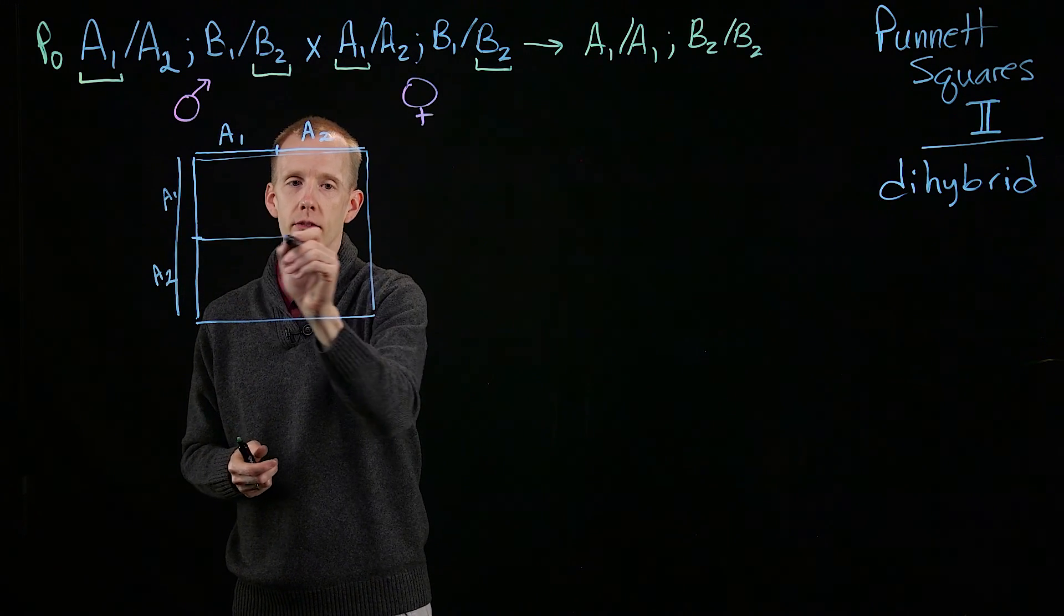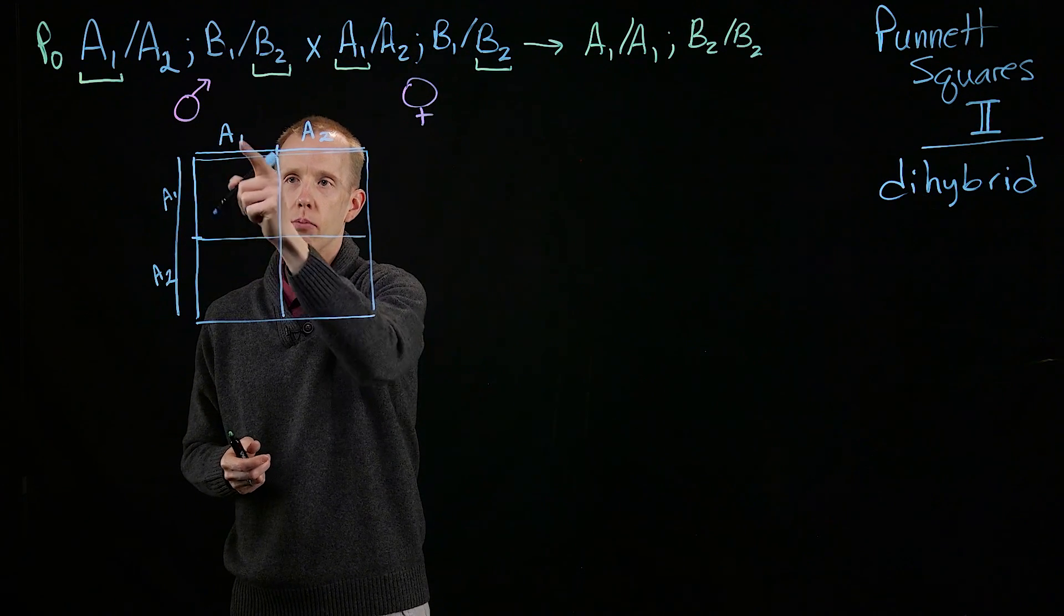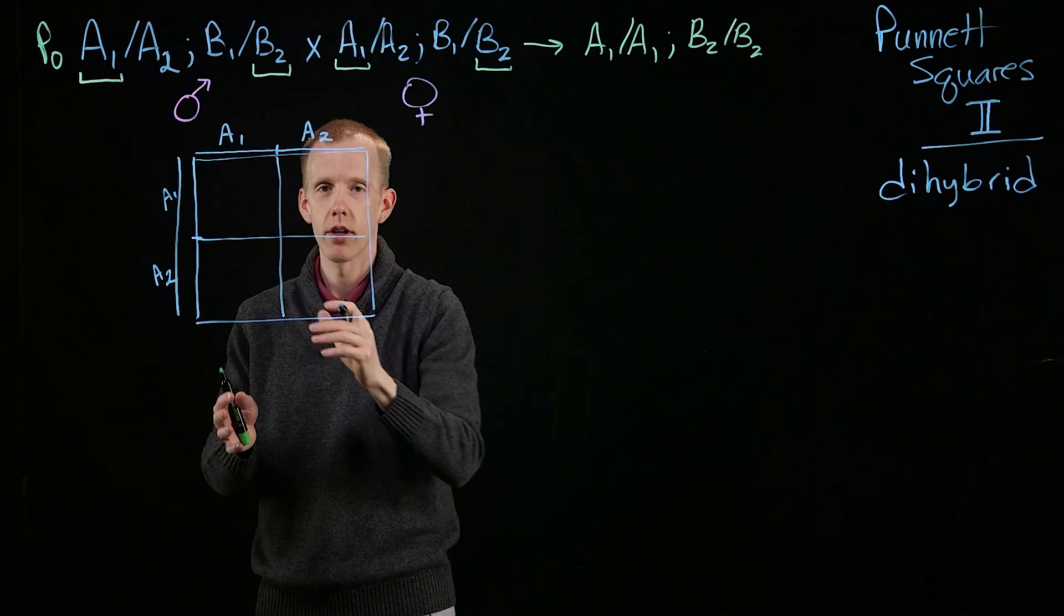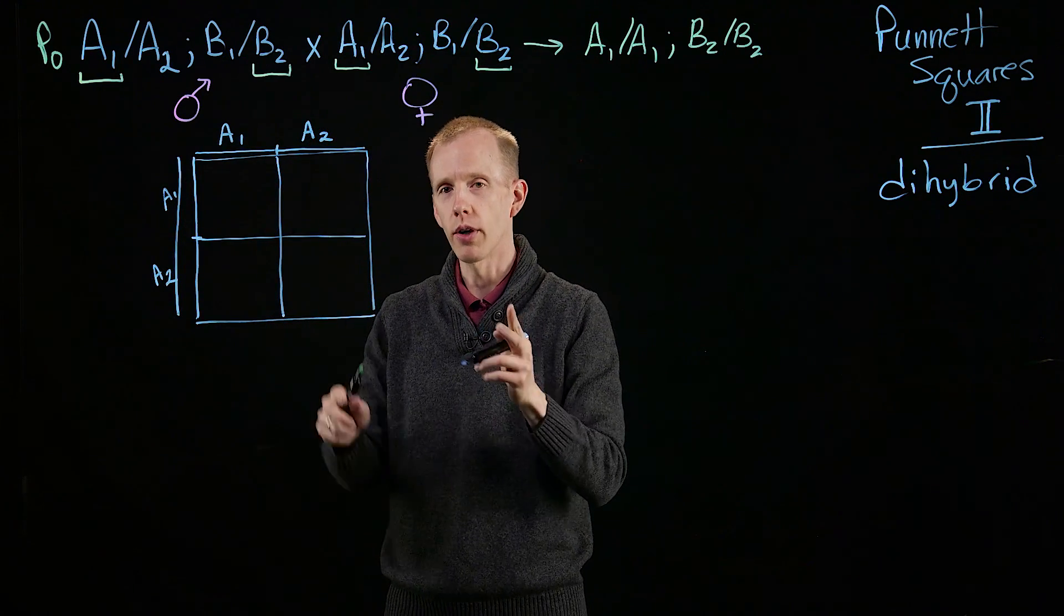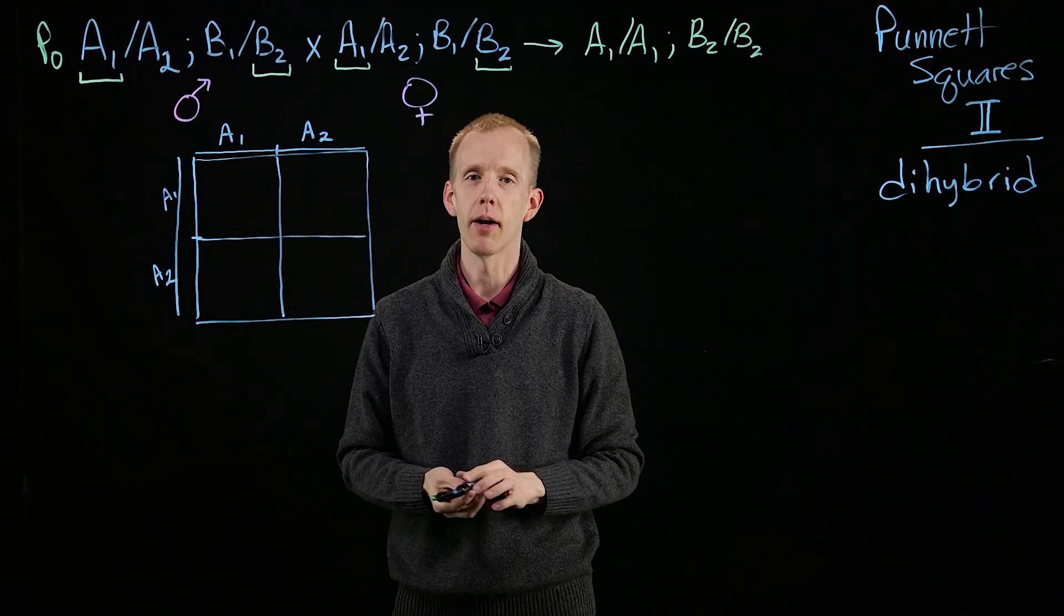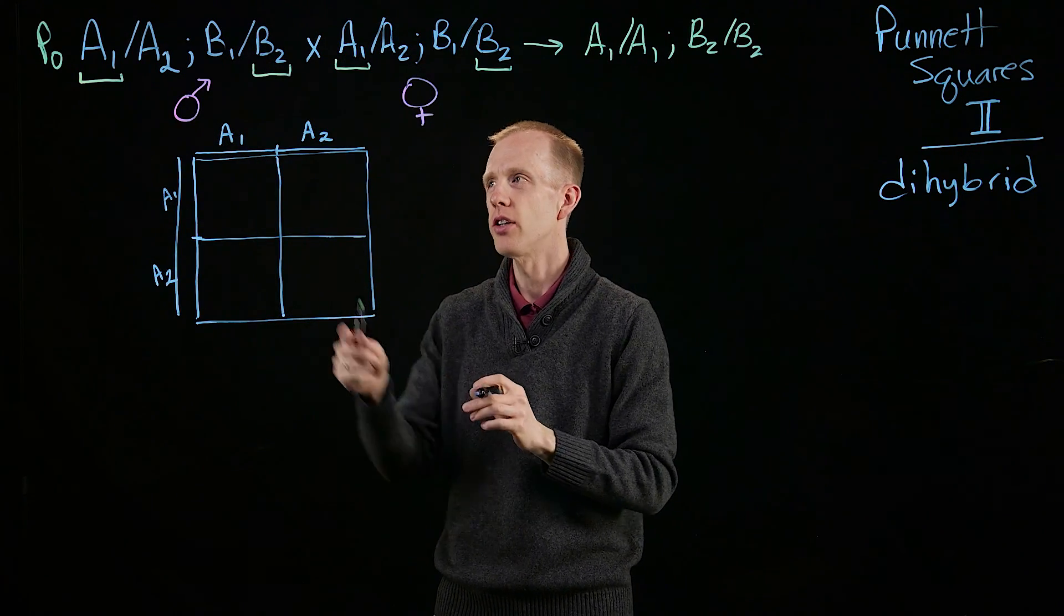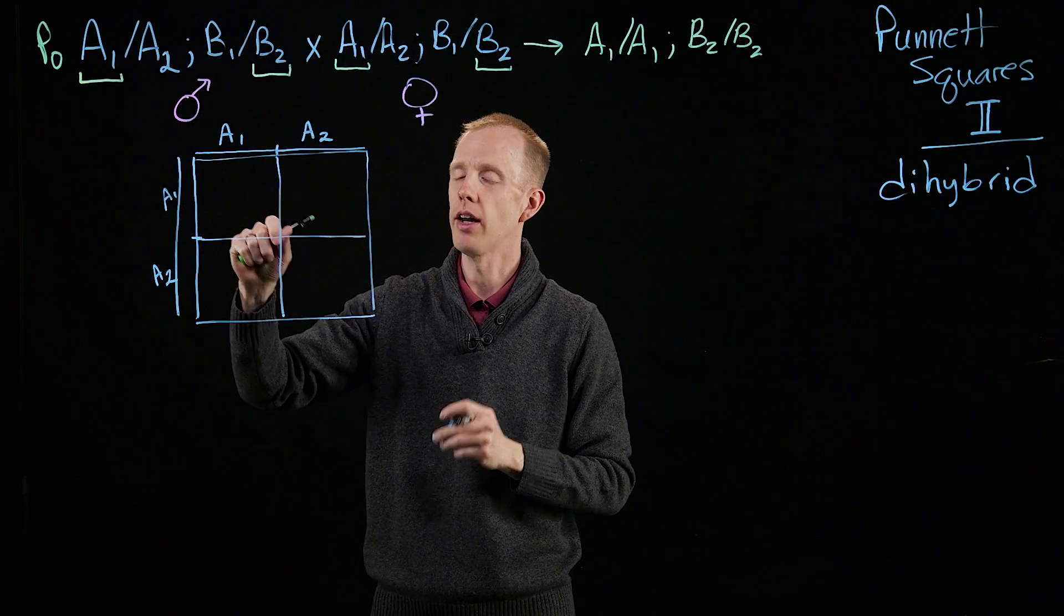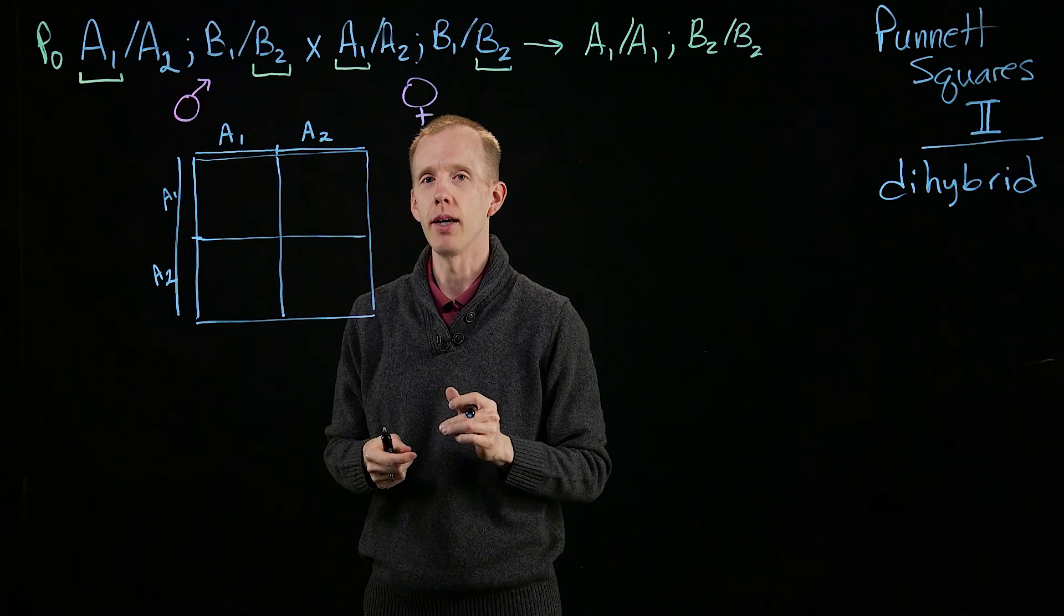So we could already fill out for the first locus by filling down and filling across. We could see what the genotypes are just at that gene, but we're now worried about two genes at the same time. So now we need to fill in. How does the haplotype at gene A interact with or relate to what's happening at gene B?